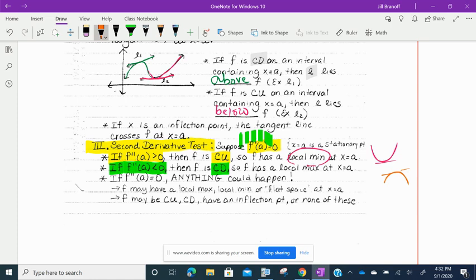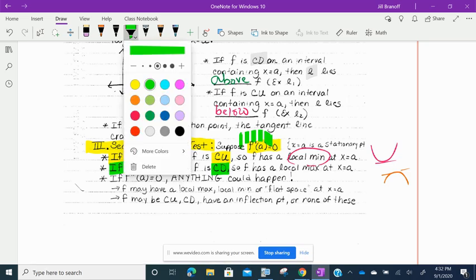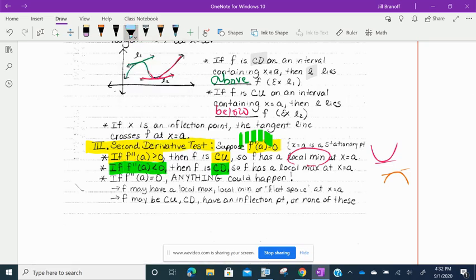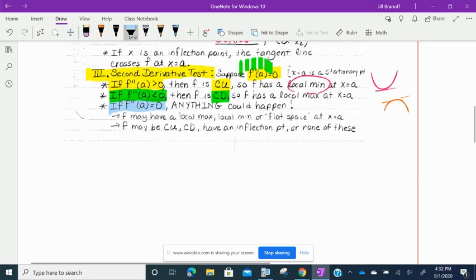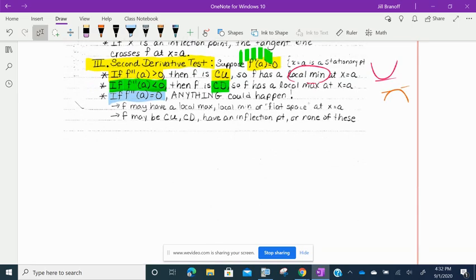Now, if you know that the second derivative is equal to 0 – so remember our first derivative was already equal to 0 at x equals a. And if we know the second derivative is 0, that is really not telling us anything – anything could happen. F could have a local max, a local min, a flat spot. It could be concave up, concave down, inflection point – so that doesn't tell us anything.